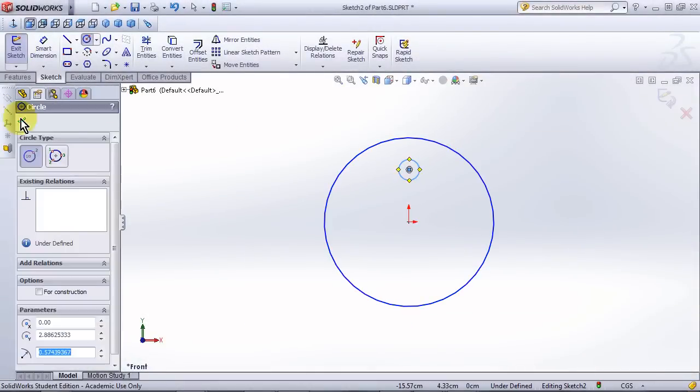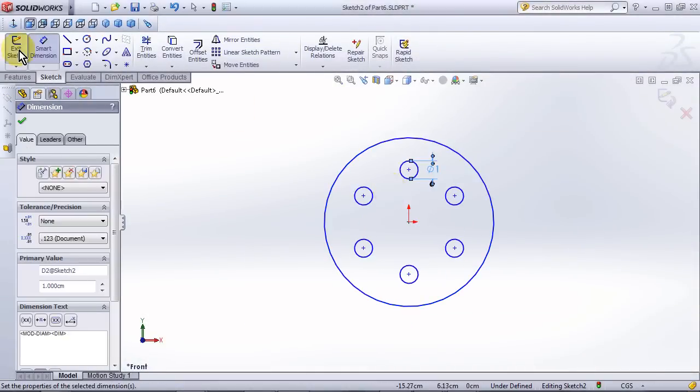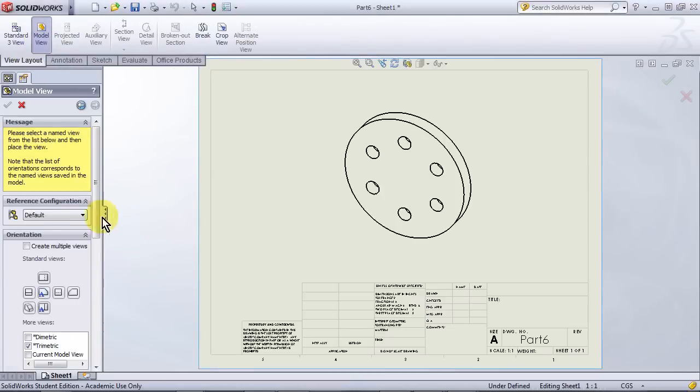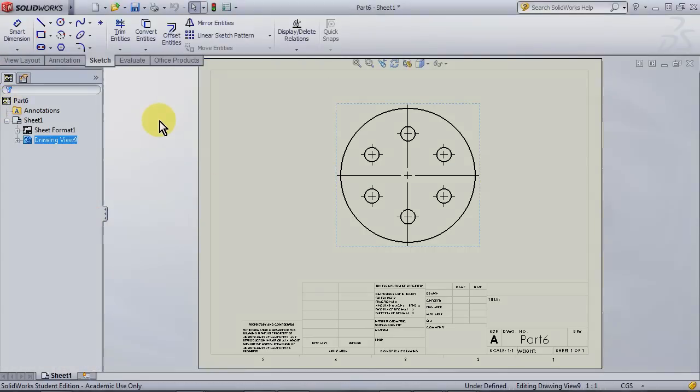Side note, this is super simple to do in SOLIDWORKS, actually, and you can print out a one-to-one template and do the same thing. It's a good demo of the circular pattern tool. Upon testing, this one works much better.